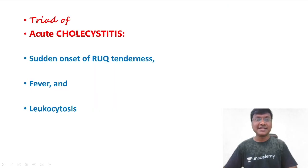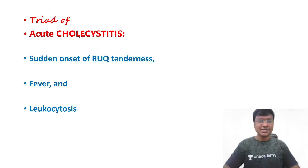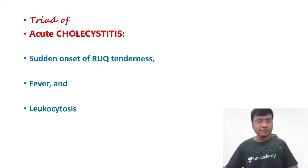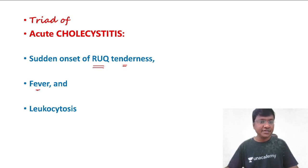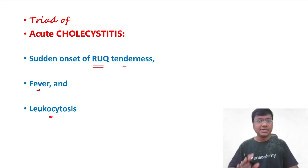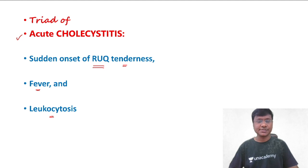Let me give you the triad of acute cholecystitis. The triad of acute cholecystitis includes sudden onset right upper quadrant pain, fever, and leukocytosis. This is the triad of acute cholecystitis.